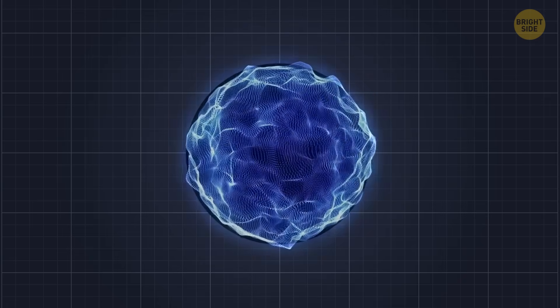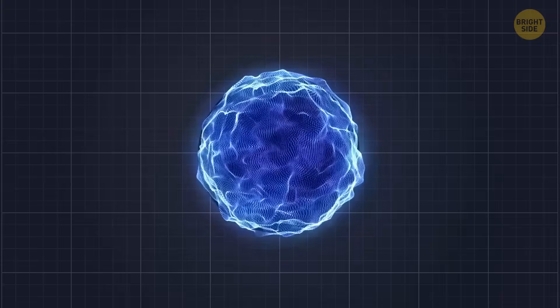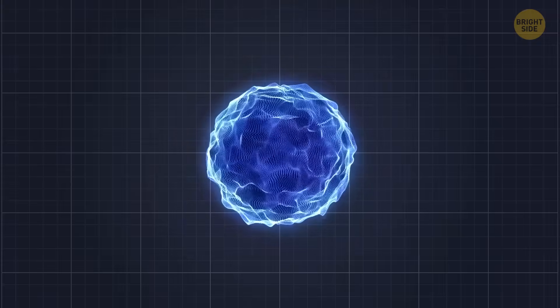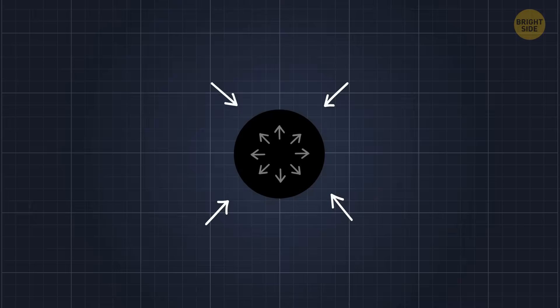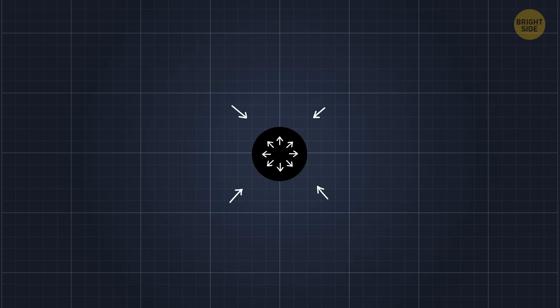As the black hole squeezes everything inward, eventually, the weird rules of quantum physics kick in. These rules create a super-strong push that can fight back against the collapse. Basically, the black hole could bounce back instead of crushing everything into nothing.